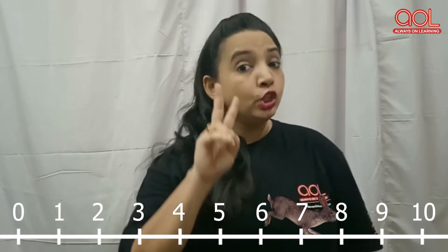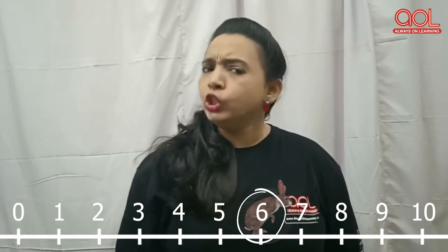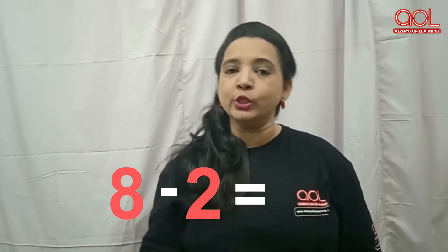Look, Binny is hopping backwards and took two backward hops and landed on number 6. Do you know, kids, what does it mean? It means 8 minus 2 is equal to 6. Hey kids, isn't it fun learning subtraction with Binny the Bunny? Come, let's go and see what's next.